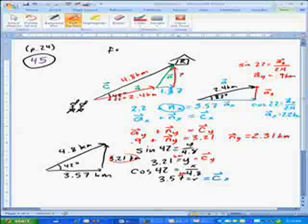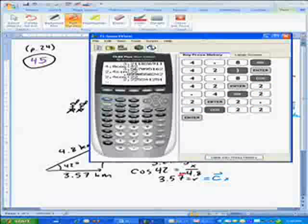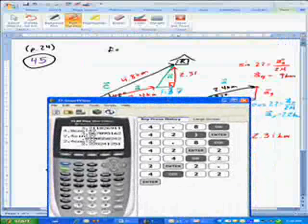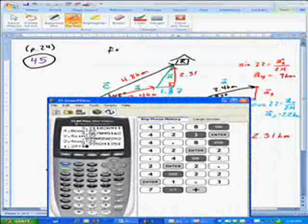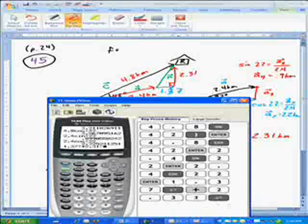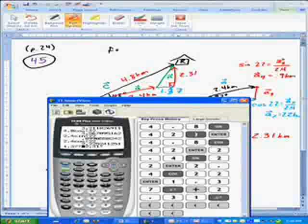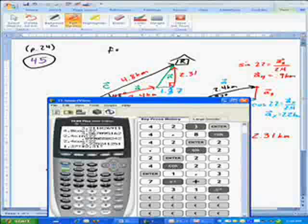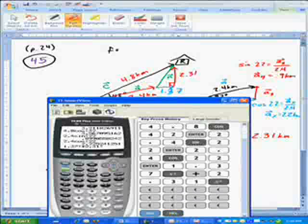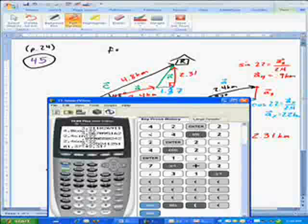And so from there, you should be able to do Pythagorean theorem. 1.37 squared, 2.31 squared equals this squared. So let's go ahead and do that. We'll bring up my calculator. So I'll do 1.37 squared plus 2.31 squared. I'm just going to arrow over here and put my parentheses in so that I can do the square root.